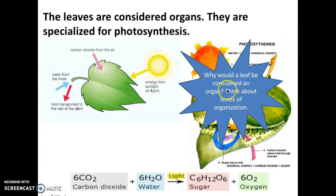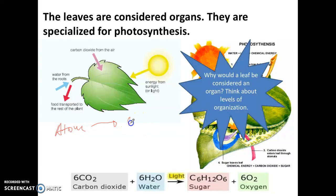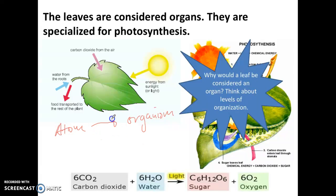Only leaves are going to do photosynthesis for plants. So why would a leaf be considered an organ? When you think about levels of organization — going from the atom all the way to perhaps organism — what would you consider a leaf, and why is it considered an organ in the first place? Do a little bit of research if you don't remember the levels of organization.